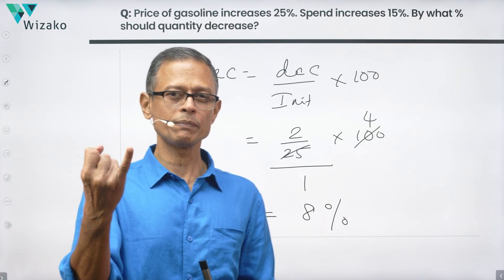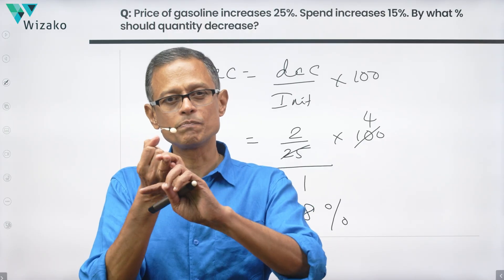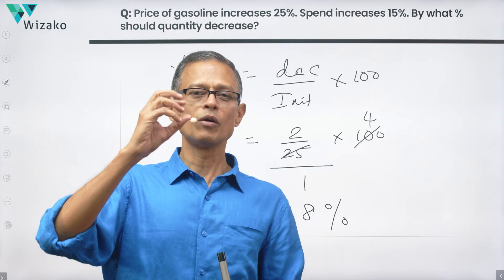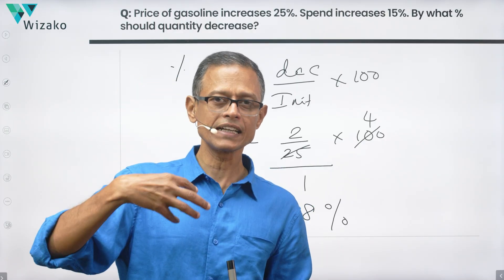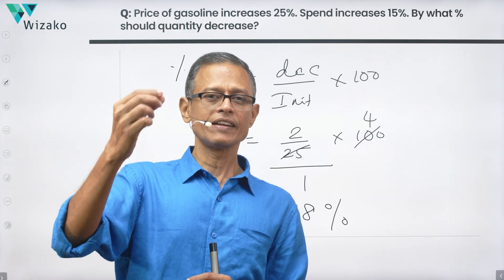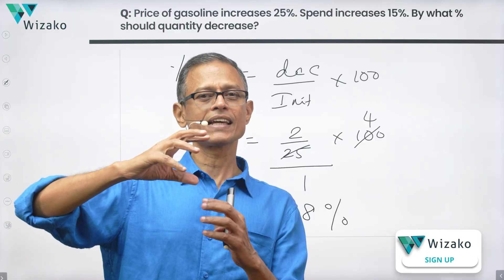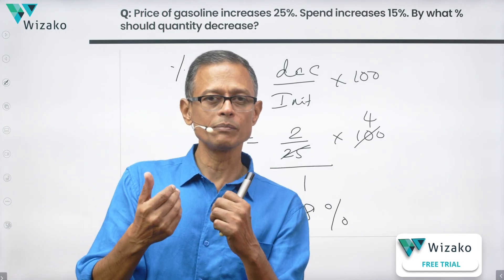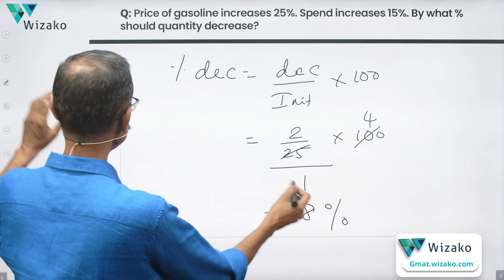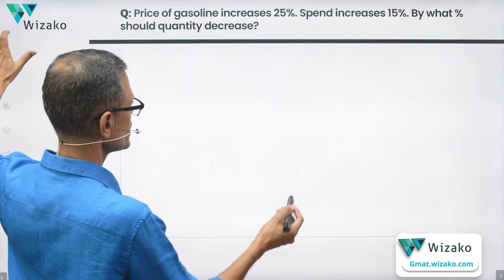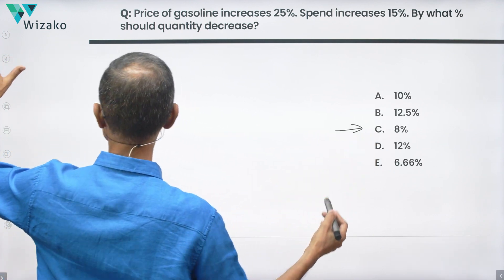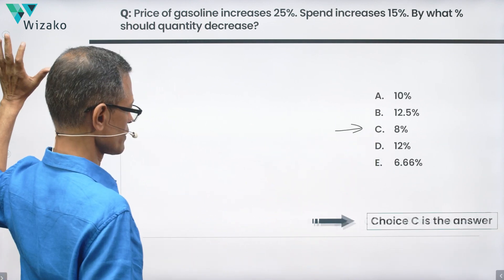Price went up by 25% and he's increasing his budget by only 15%, so his quantity comes down by 8%. If he was able to buy, say, 100 gallons earlier, now he will be buying only 92 gallons. 8% is the answer. Looking at the answer options, 8% is choice E — this is the correct answer to the question.